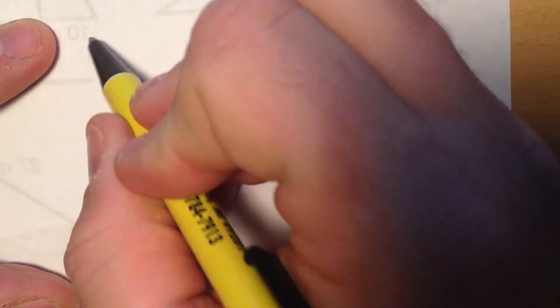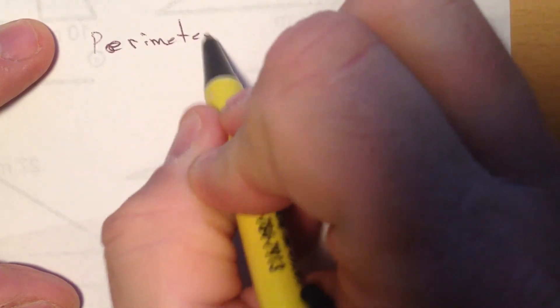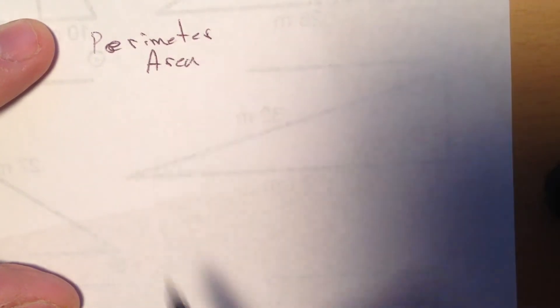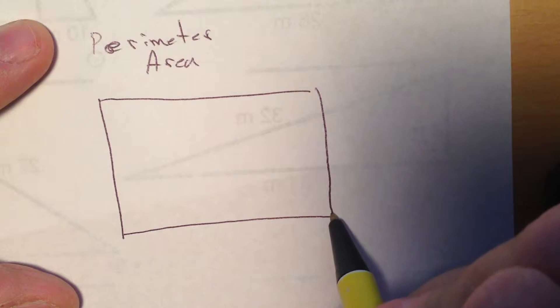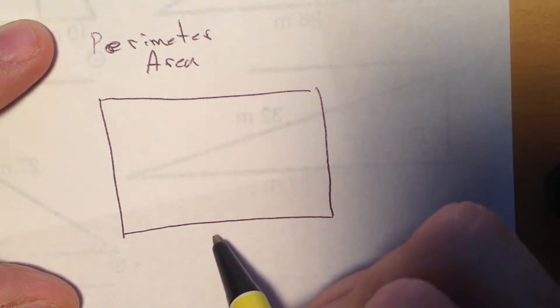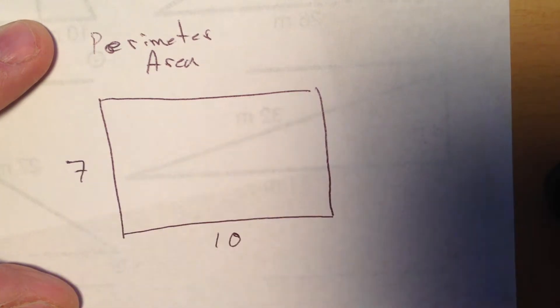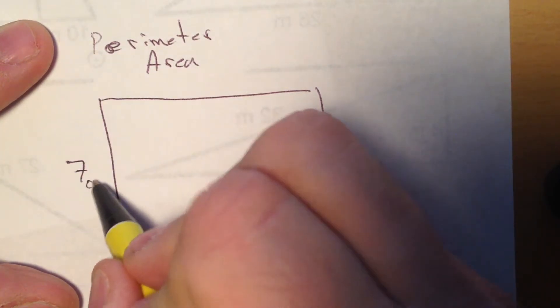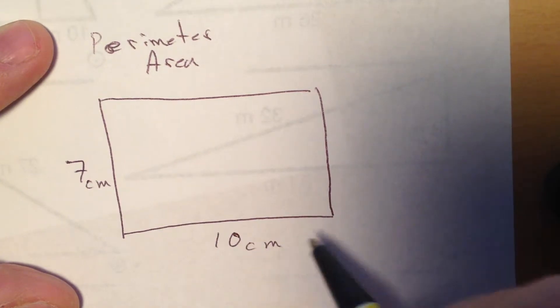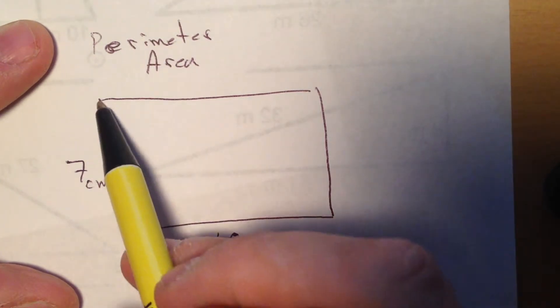Okay, what we're looking for today is the perimeter and area. For a rectangle, not very difficult. If I have a base of let's say 10 and the height of 7, to find the perimeter I'm going to—let's put some units on here, centimeters. To find the perimeter, I go around the outside of the object.